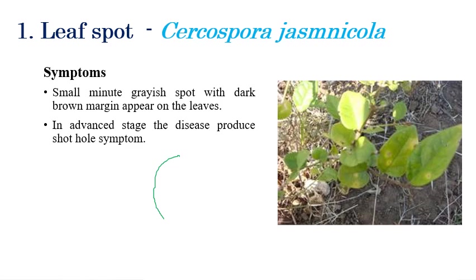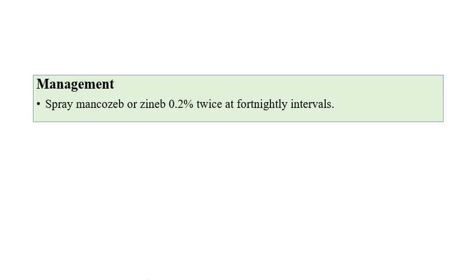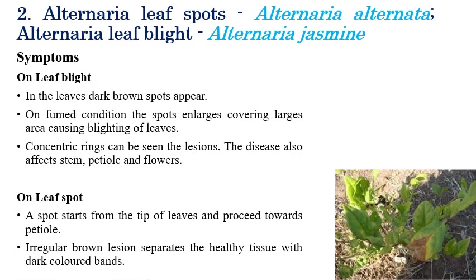The first disease is Cercospora leaf spot, caused by Cercospora jasminicola. Initially, small gray to brown color spots appear on leaves, producing shot-hole symptoms. In later stages, these produce prominent shot-hole symptoms. For management, Mancozeb or Zineb at the rate of 0.25 percent, sprayed twice at fortnightly intervals, can manage this disease.